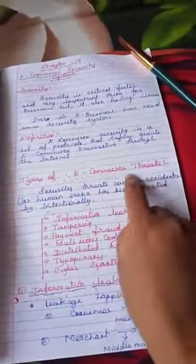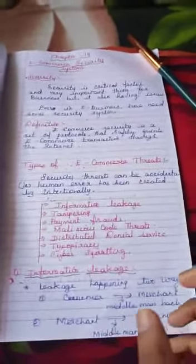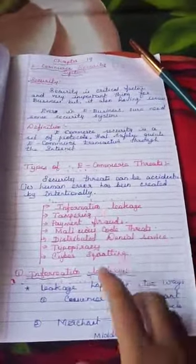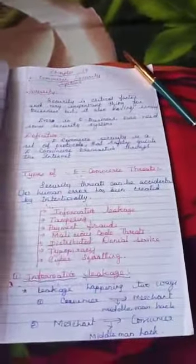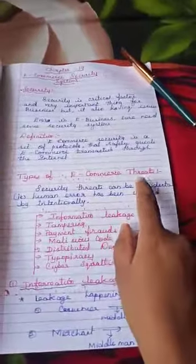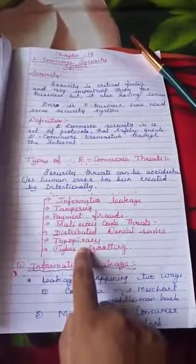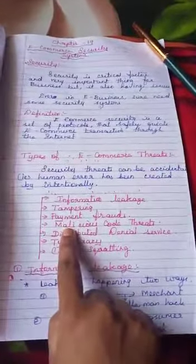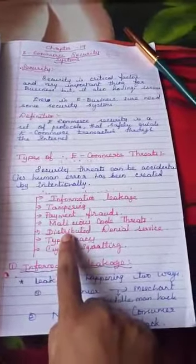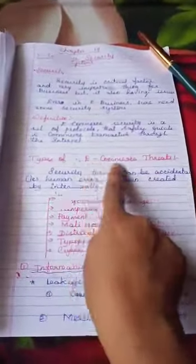What are the e-commerce threats? Why are security systems built? Because e-commerce is having some threats — threats meaning important leakages. The types of threats are: first, information leakage; second, tampering; third, payment fraud; fourth, malicious code threat; fifth, distributed denial of service; sixth, typo piracy; and seventh, cyber-squatting. These are the threats in e-commerce.